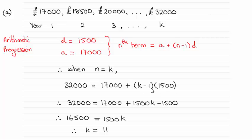So just expand the bracket here, giving us these two terms, rearrange and solve. And you should be able to see that K turns out to be 11.